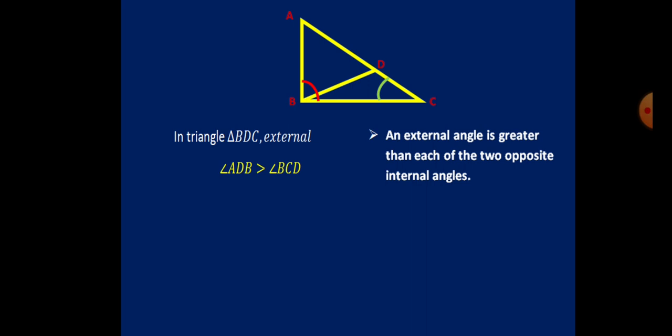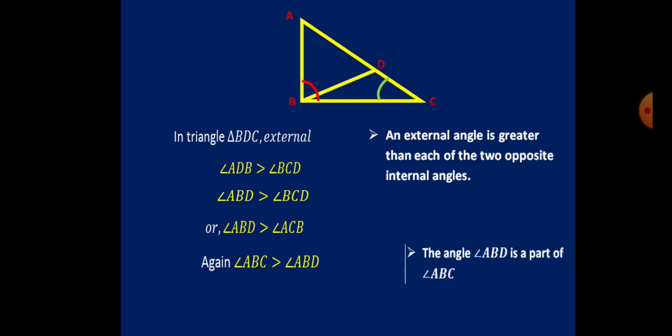From the previous slide, ADB and ABD are equal, so ADB is replaced by ABD. From the picture, BCD and ACB are exactly the same, so BCD is replaced by ACB. Now we replace ABD by ABC, as ABC is greater than ABD since ABD is part of angle ABC. So ABC is greater than ACB. The proof is done.